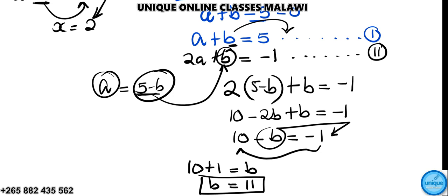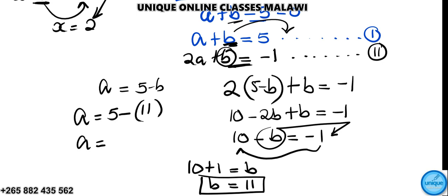Now to find a, we can use either equation. Using a equals 5 minus b, and b equals 11, so a equals 5 minus 11, which equals negative 6. Therefore a is equal to negative 6 and b is equal to 11.